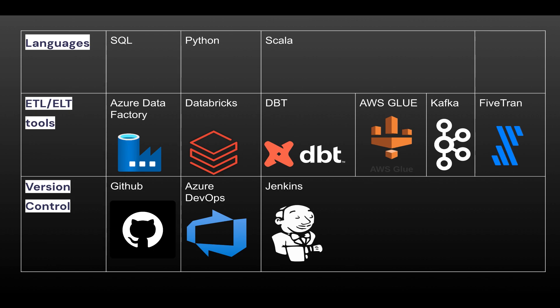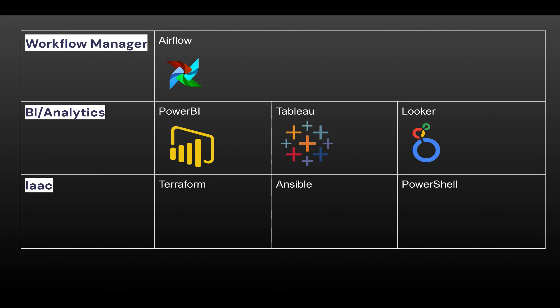Version control is always helpful because in day-to-day development you should know GitHub, Azure DevOps, and Jenkins — this helps you become a really good data engineer. Similarly, once you build pipelines you need to deploy them in a systematic, scheduled way. While most ETL tools have their own scheduler, it's better to also know Airflow as a technology.